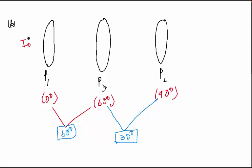And then obviously, because it is unpolarized light and it undergoes polarization for the first time, the intensity through P1 would reduce to I0 by 2.